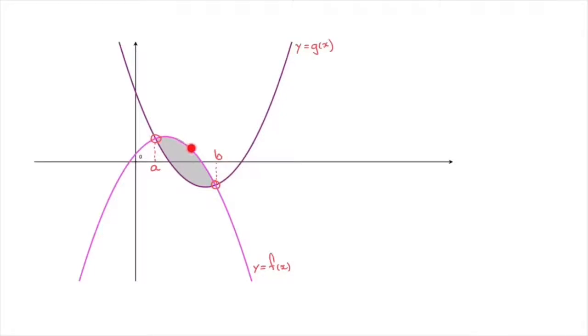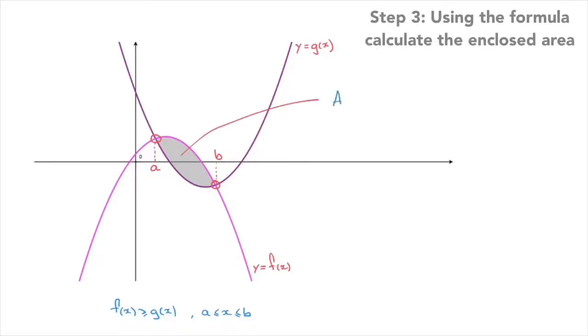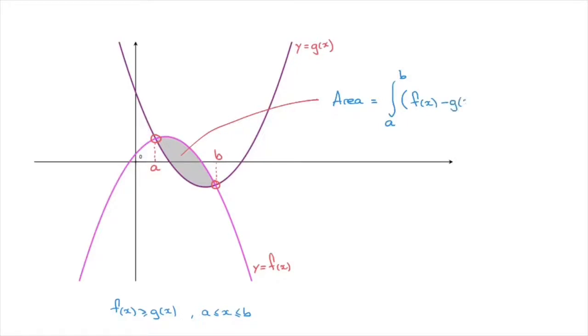Since f of x is above g of x for x between a and b, when this happens, the area enclosed between these two curves can be calculated using the following formula. The area equals the definite integral from a to b of f of x minus g of x.